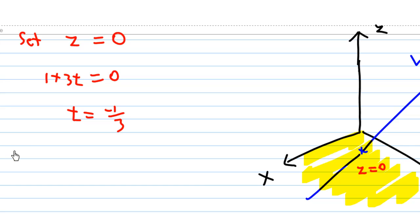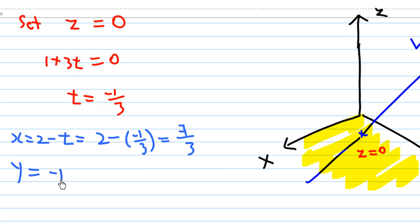So x = 2 - t = 2 - (-1/3) = 7/3, and y = -1 + 2t = -1 + 2(-1/3) = -5/3. Therefore, the point where it intersects the xy-plane is x = 7/3, y = -5/3, and z = 0.